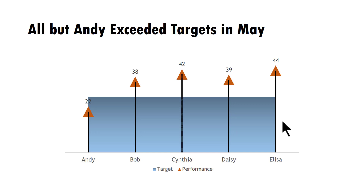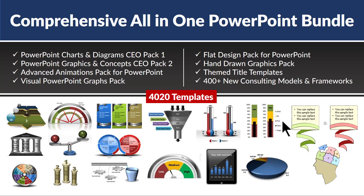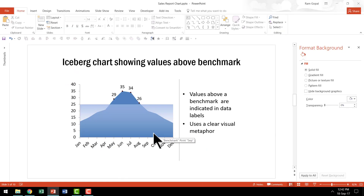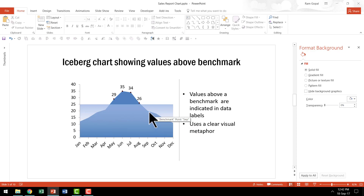What you saw is just one example of how you can make your charts look more interesting. Now I'm going to show you some creative options taken from our comprehensive all-in-one PowerPoint bundle — a collection of more than 4,020 premium PowerPoint templates. The first example is our iceberg chart showing values above benchmark. This chart plays on the metaphor of the tip of the iceberg: the water level represents the target, performance above the water level is shown with data labels, and underperformers are below. This is a totally data-driven chart.